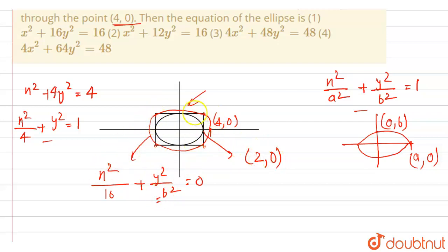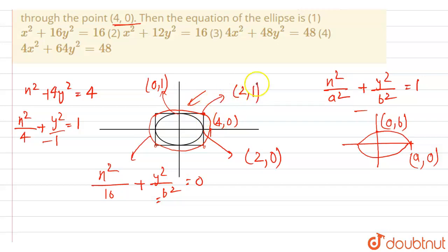The inner ellipse has the point 2 comma 0, and the y-intercept can be written as 0 comma b, where b = 1, so that point is 0 comma 1. From this, the corner of the rectangle is at 2 comma 1, since x = 2 and y = 1. So the point 2 comma 1 lies on the bigger ellipse.